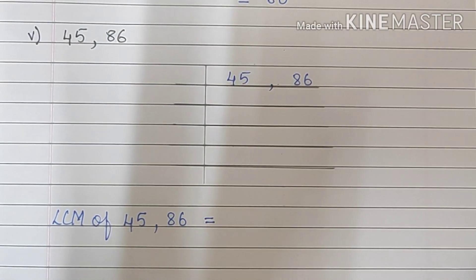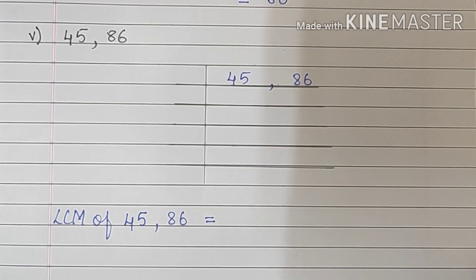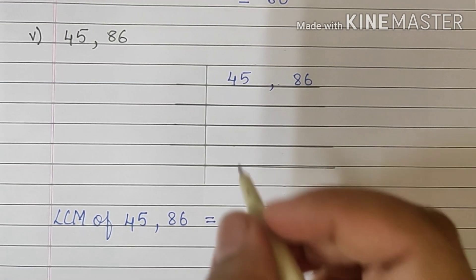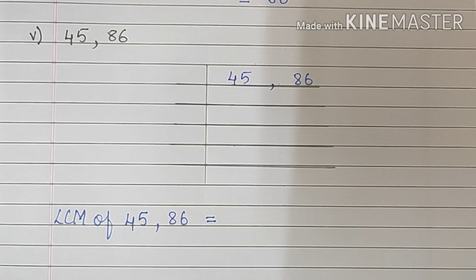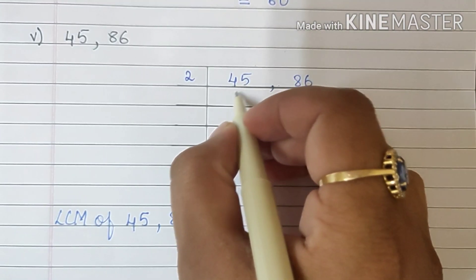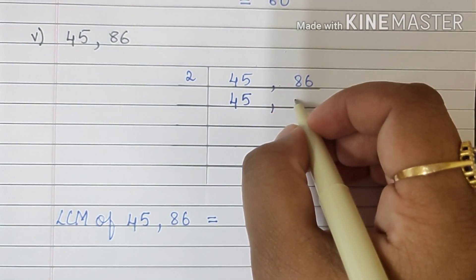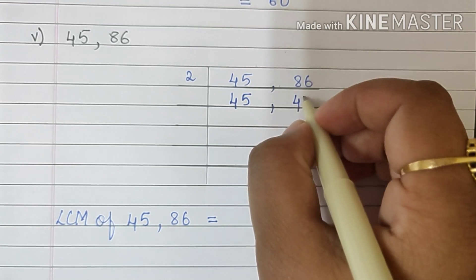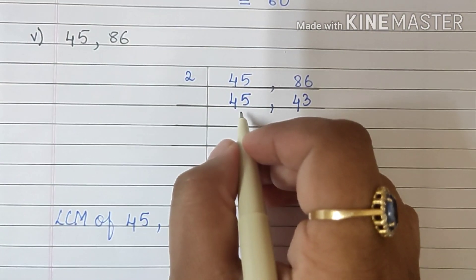Let's continue with sum number 5. Sum number 5 says 45 and 86. We are doing it by method 2. This number is even, so we'll begin with 2. 2 into 45 will come down as it is. 2 4s are 8, 2 3s are 6, so this is 43. Now we are moving to the next number.